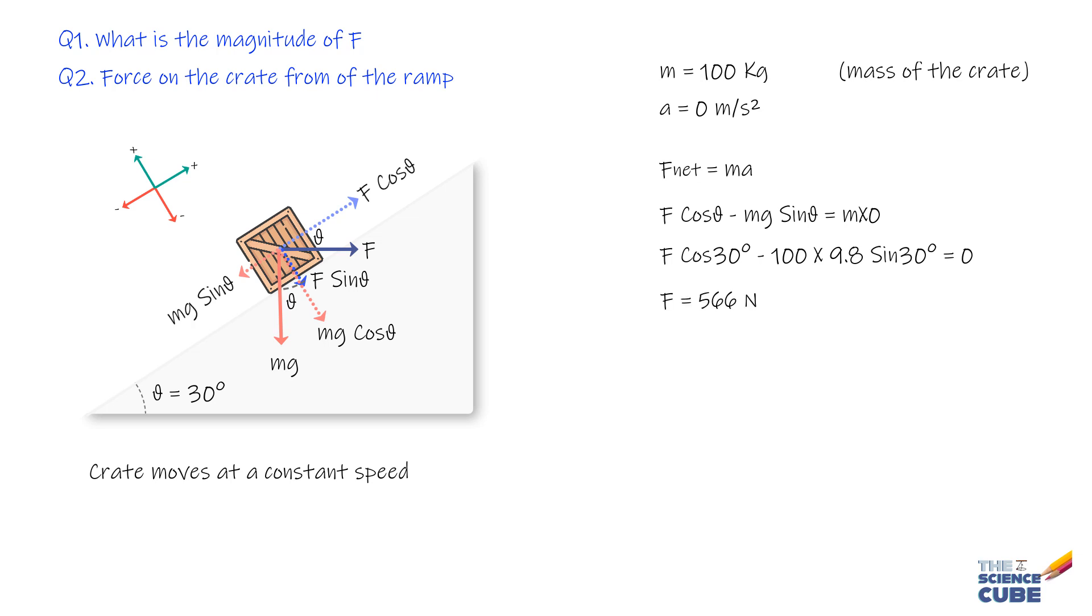For part B, we need to find the normal force Fn, which is the support force from the incline on the crate. Remember, the normal force always acts perpendicular to the surface the object is in contact with. Since there is no acceleration perpendicular to the incline, Newton's second law in the perpendicular direction gives us Fn minus F sin theta minus Mg cos theta equals 0.